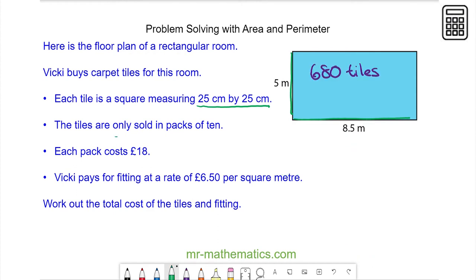The tiles are sold in packs of 10, so I do 680 divided by 10, which is 68 packs. Each pack costs £18, so we have 68 multiplied by 18, which is £1,224.